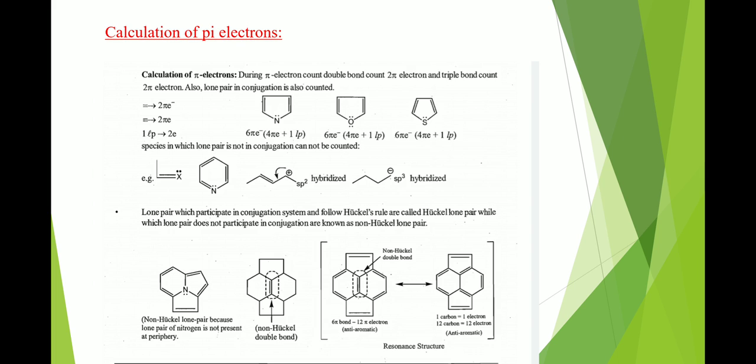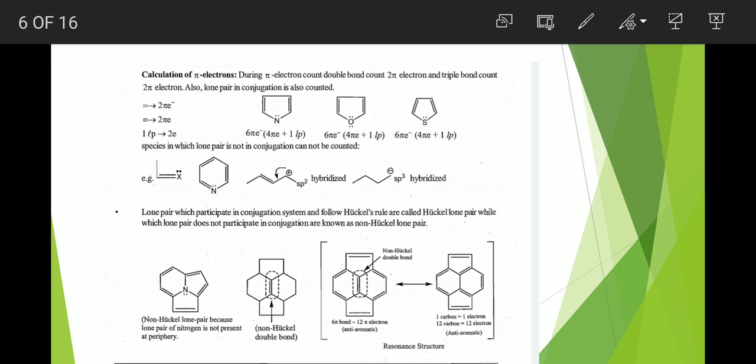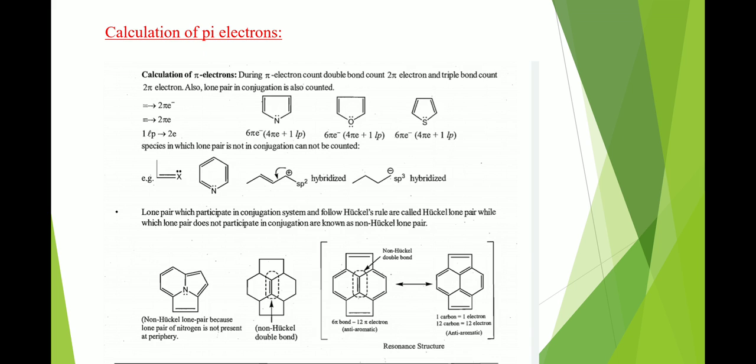To calculate the number of pi electrons in a given compound, follow these rules: a double bond counts as two pi electrons, a triple bond counts as two pi electrons, and one lone pair of electrons also counts as two electrons.